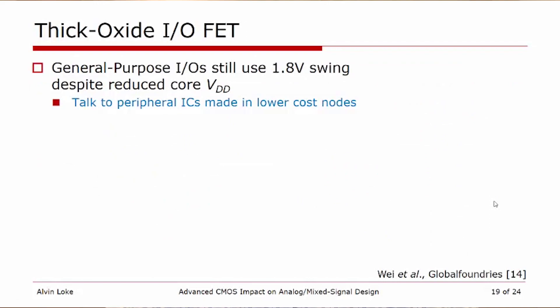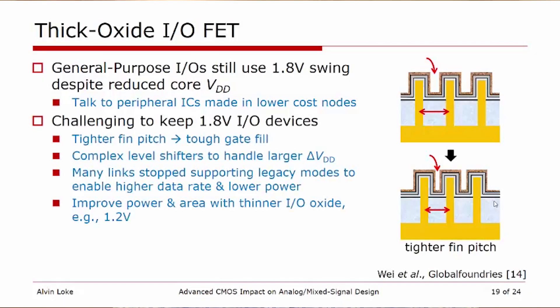Thick oxide transistors are also a big concern in these new nodes. Historically we continue to use 1.8V swing general-purpose IOs despite reduced core voltage, because high-performance ICs need to communicate with peripheral ICs made in lower-cost nodes. It is increasingly difficult to keep these 1.8V IO devices as fin pitch is scaled, making gate fill harder in a replacement metal gate scheme. Level shifters are also increasingly difficult to bridge the larger delta-VDD between the lower core voltage and the IO voltage.